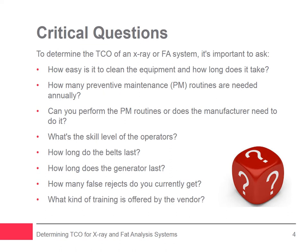By answering these questions, performance is easier to gauge. Performance is inherent in a determination of TCO. A machine that offers greater precision will help to boost reliability and uptime. High-performance, efficient equipment helps a CPG or meat and poultry processor make products at a lower cost for higher profitability.